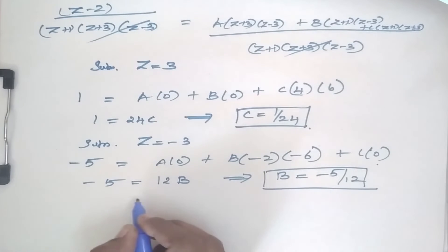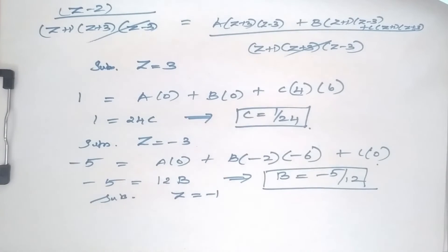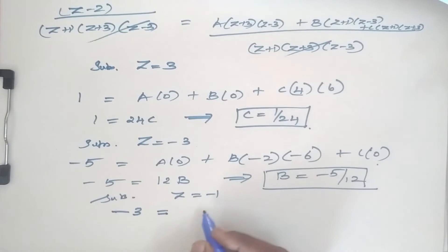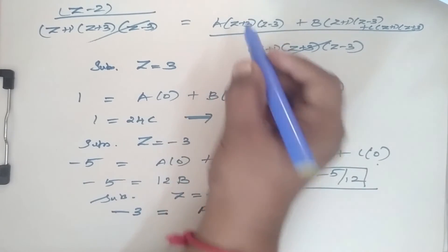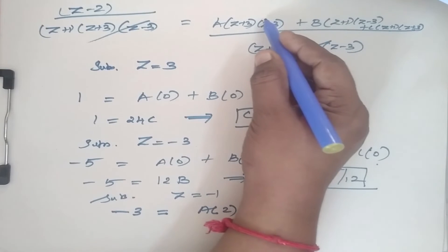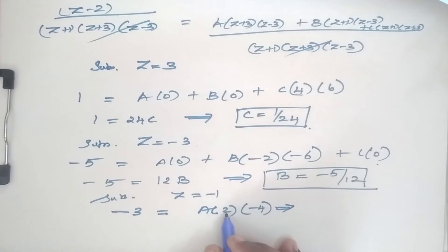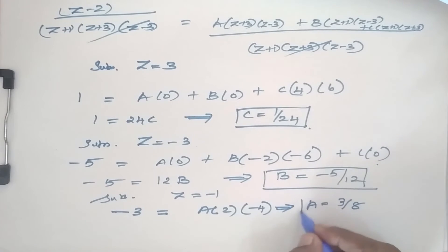Substitute z = −1 to find A. When z = −1, the numerator gives −1 − 2 = −3. So −3 = A·(−1+3)·(−1−3) = A·2·(−4) = −8A. This implies A = 3/8.